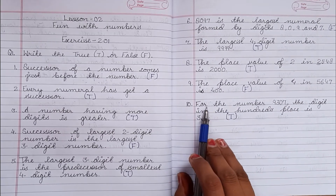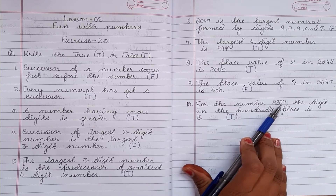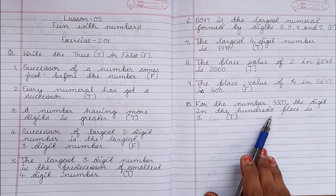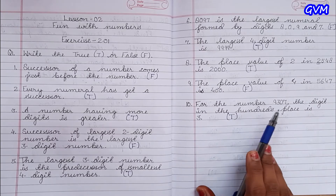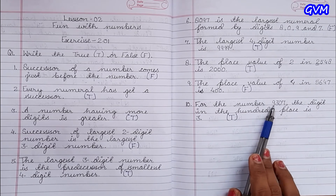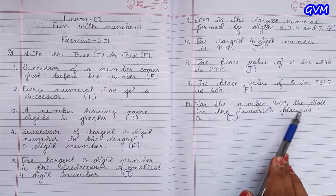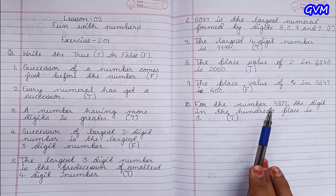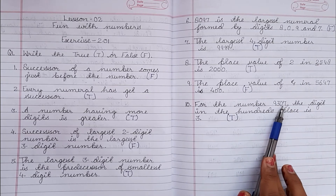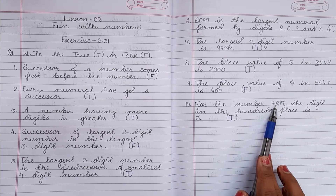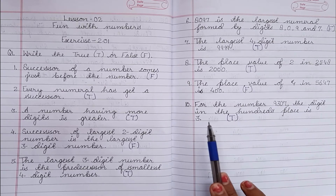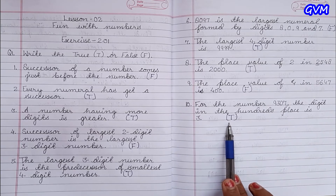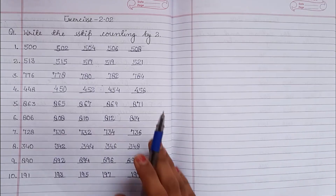Number ten: 'For the number nine thousand three hundred seven, the digit in the hundreds place is three.' Hum dekhenge: ones, tens, hundreds — three kya hai? Hundreds ki place mein hai. Aur yahan par bhi humain three hi bataya hai — so it's true. We have the next exercise, Exercise 2.02.